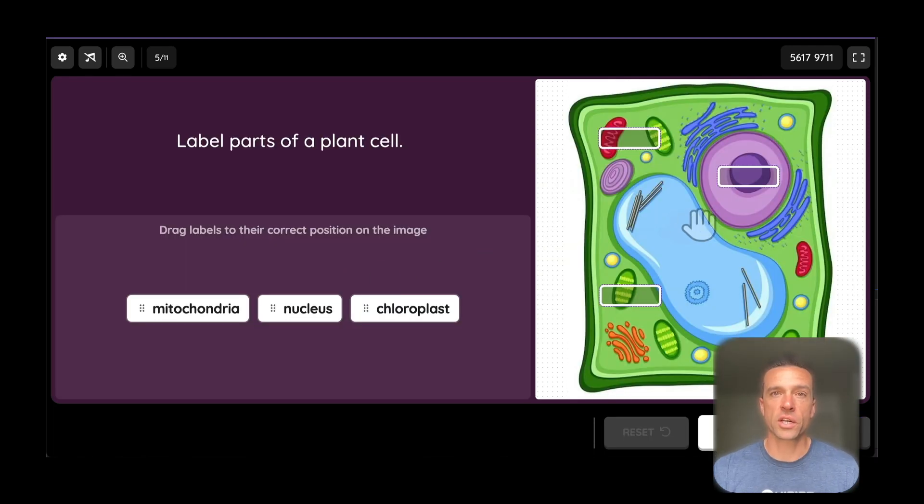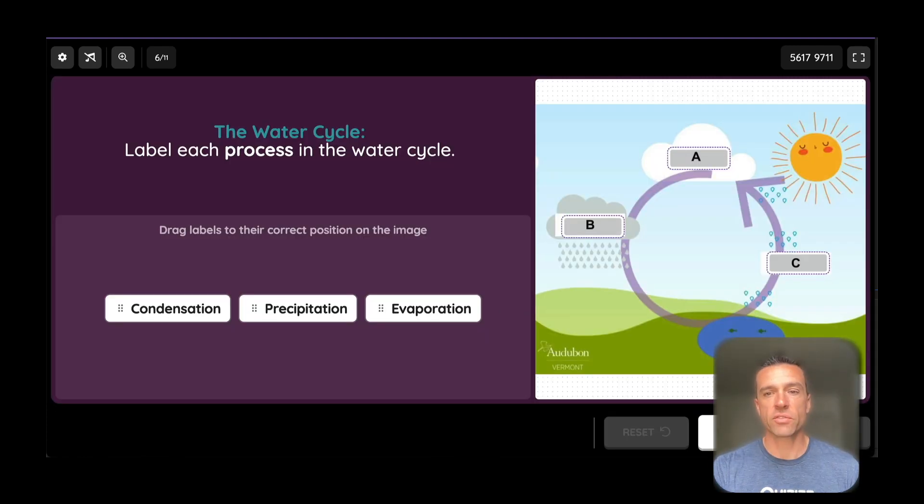And the next couple of questions that I'm going to show you are teachers who've been using our new labeling question type. So it's really easy to see how labeling would go with science. Take anything, a cell like this person did here. You could also use it for something like this, right? The water cycle.